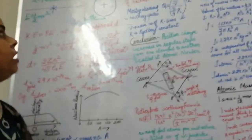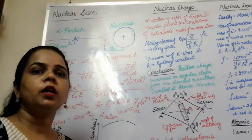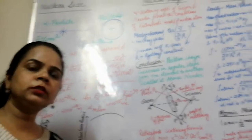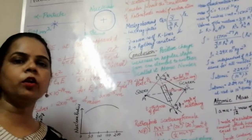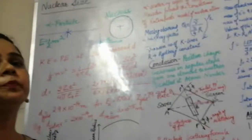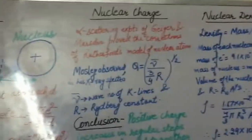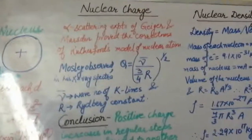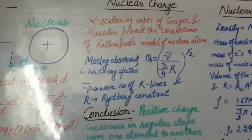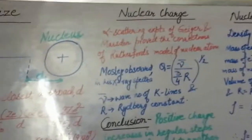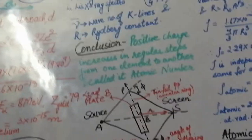Scientists Geiger and Marsden also performed the alpha scattering experiment, and their conclusions were exactly in accordance with Rutherford's scattering experiment, proving the exactness of the Rutherford model. Another scientist, Moseley, also performed work and gave a factor Q, defined as Q = ν̄ / (3/4·R)^(1/2), where ν̄ is the wave number of the K lines of the hydrogen spectrum and R is the Rydberg constant. From this formula, the charge could also be calculated.